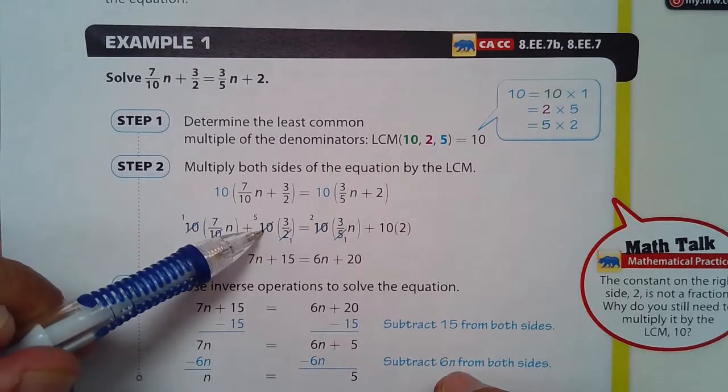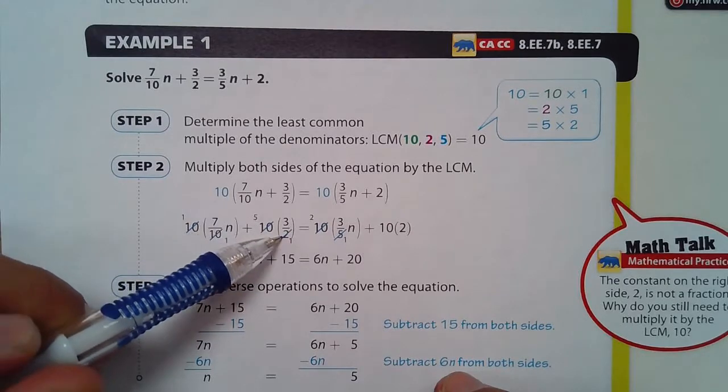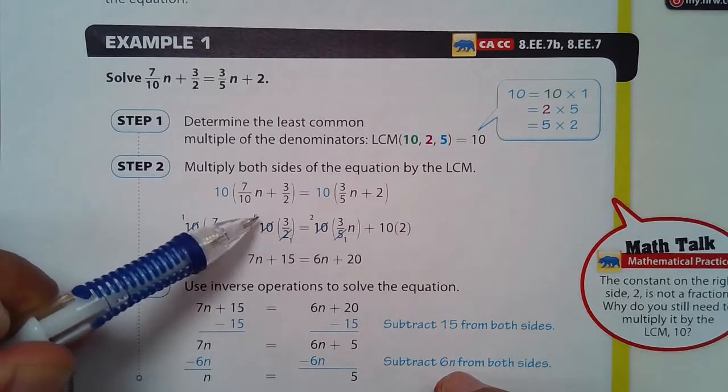2 divides 10 five times, so 10 divided by 2 is 5 and 2 divided by 2 is 1. And 3 times 5 is 15.